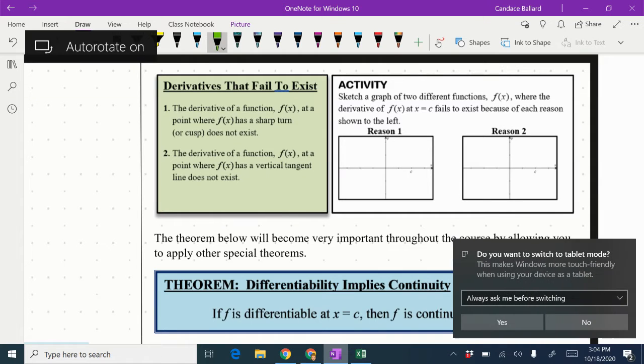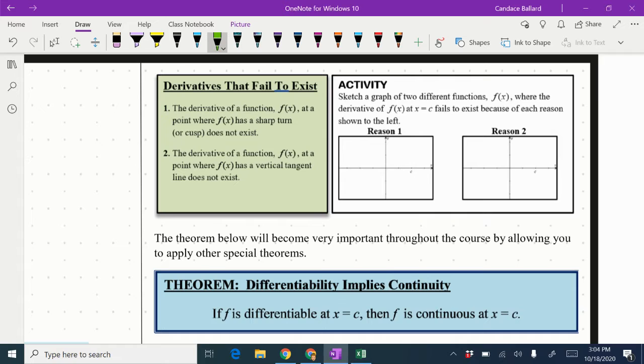In this video, we're continuing topic 2.4, and we're going to look at this activity where we have to draw something where they meet condition 1 and condition 2. So we're going to sketch two different functions where the derivative of f(x) at x equals c fails to exist because of each reason shown to the left.